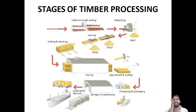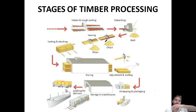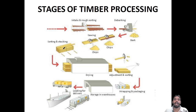The stages of timber processing are as follows. First, intake and rough sorting, then debarking — in this step the bark is removed. After debarking, the timber is converted into chips.